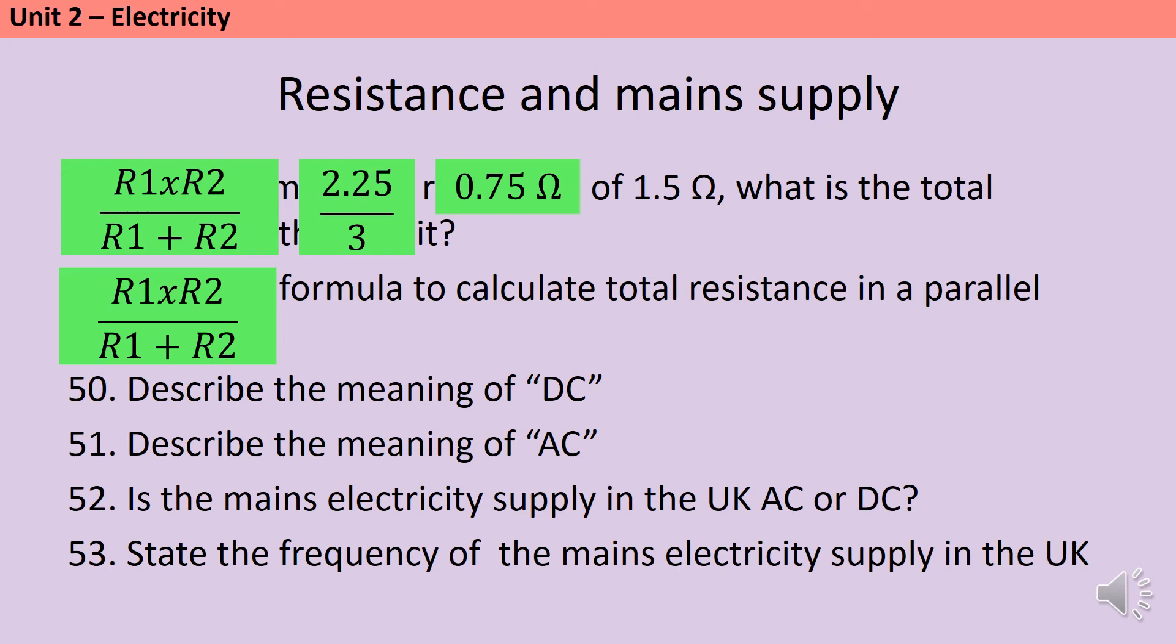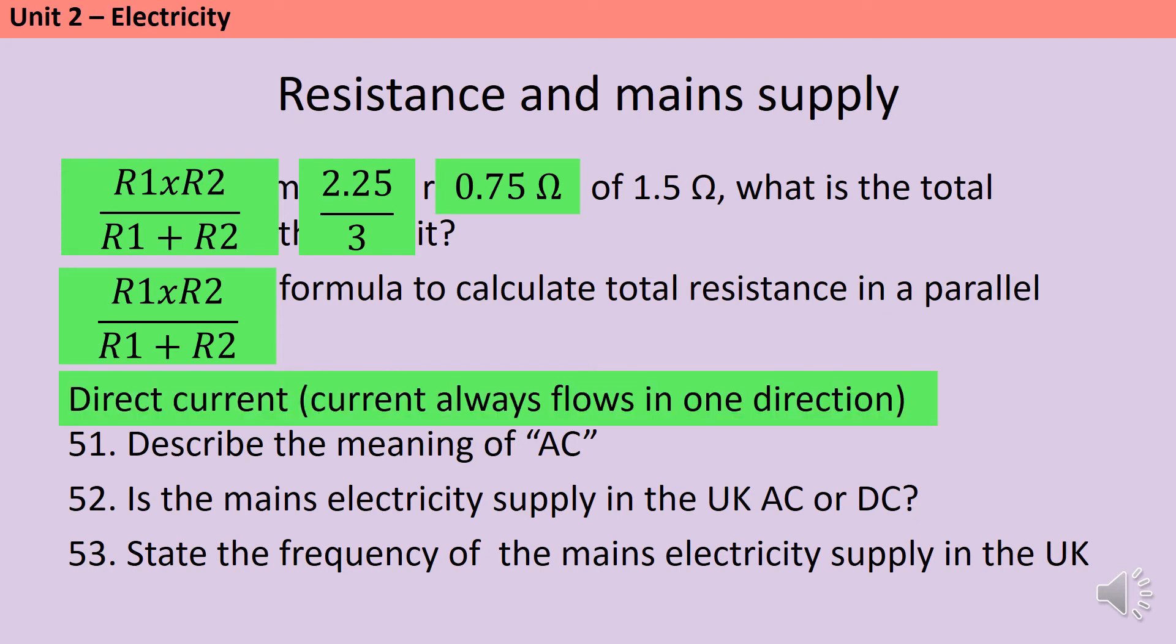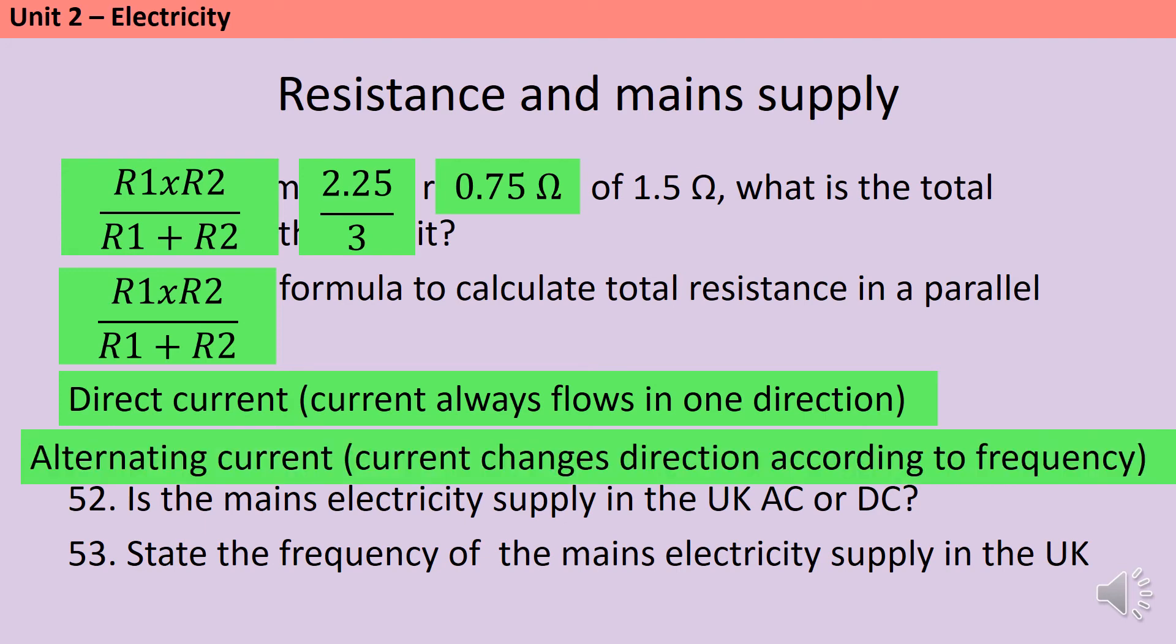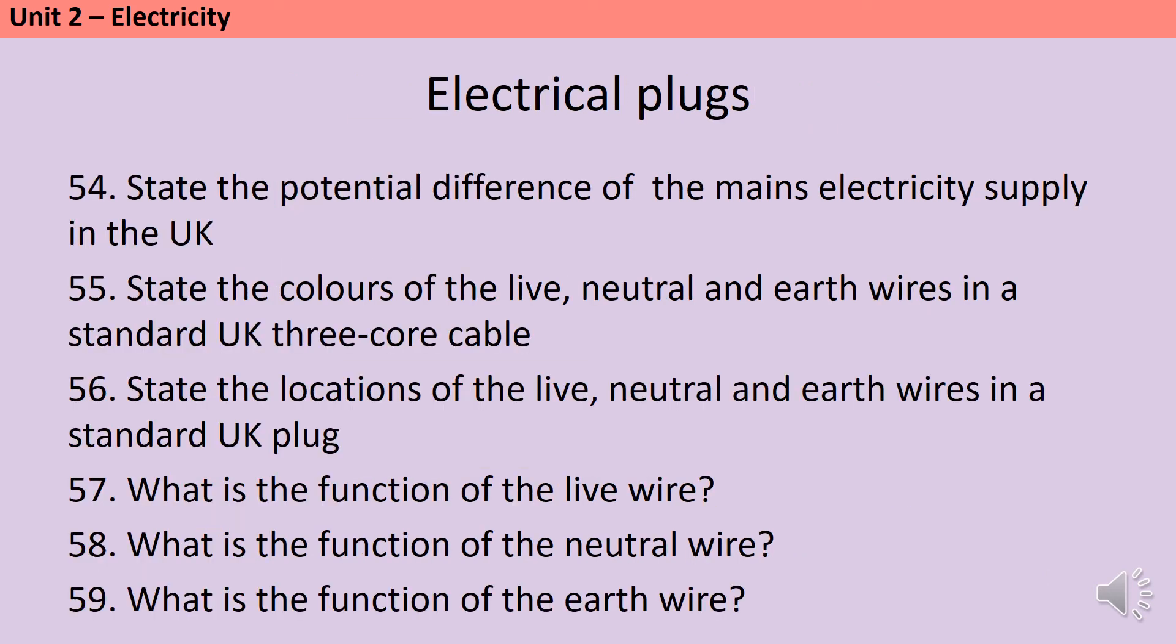DC is direct current. It's what happens when the current always flows in one direction, as it does in a simple circuit using a cell. AC is alternating current, and it happens when the current changes direction. So for instance, if the alternating current frequency is 50 Hertz, that means that the direction changes 50 times a second. The mains electricity supply in the UK is AC and it has a frequency of 50 Hertz. It has a potential difference of 230 volts.